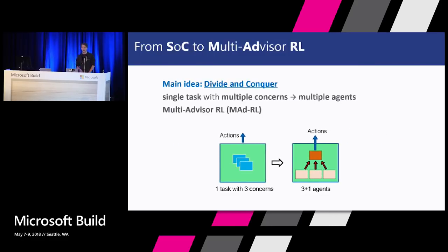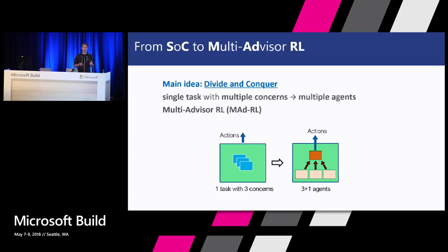Our next step was basically to take the experimental results from the SOC paper and come up with more of a theoretical underpinning for why those behaviors happen. The multi-advisor RL, or MATT-RL, paper provides the mathematical insight behind the behavior of the different ways that you can do SOC. We basically prove a few criteria on when you can expect these attractors to exist or not, and the kinds of behaviors that you want from your individual agents when you are breaking one problem up to be solved by multiple agents.